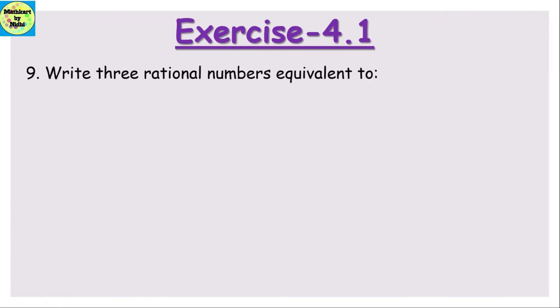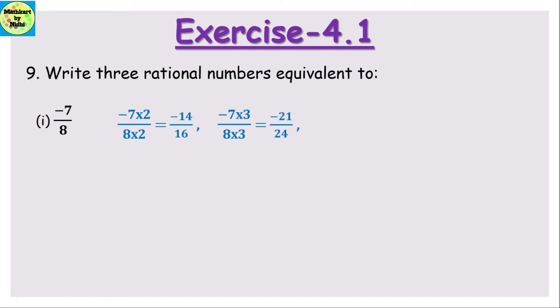Question number 9: write 3 rational numbers equivalent to -7/8. To make equivalent rational numbers, multiply numerator and denominator by the same number. I am taking 2, 3, and 4 for simplicity. Multiplying by 2 gives -14/16. Multiplying by 3 gives -21/24. Multiplying by 4 gives -28/32. You can choose any number of your own choice, but ensure you multiply both numerator and denominator by the same number.